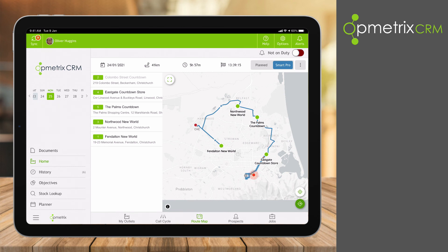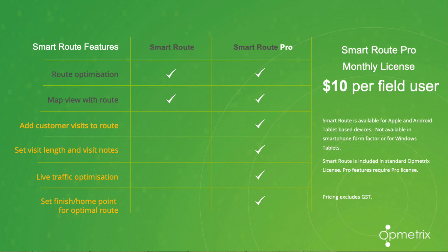There are two elements to SmartRoute: SmartRoute and SmartRoute Pro. SmartRoute is included for all Opmetrix users — you get to see the map and it will plan out the best route. In SmartRoute Pro you get additional features: you can see live driving conditions, see where there are traffic buildups, and it will readjust the route based on that. You also get to set your finish point. Those two features are quite useful for optimising the route and saving even more time and money.